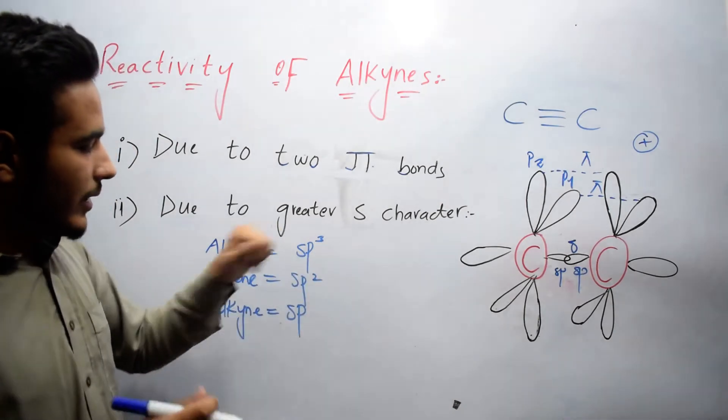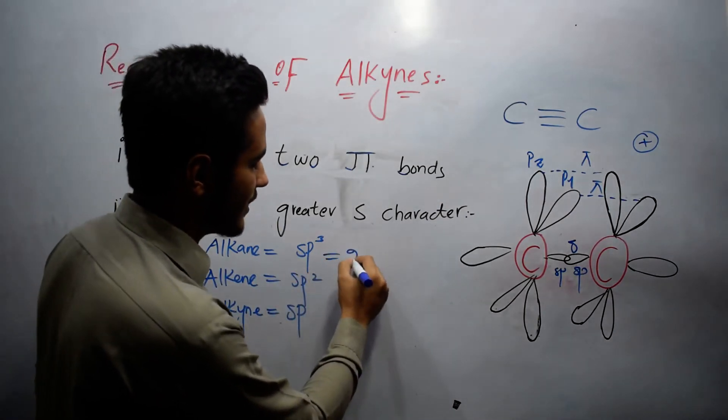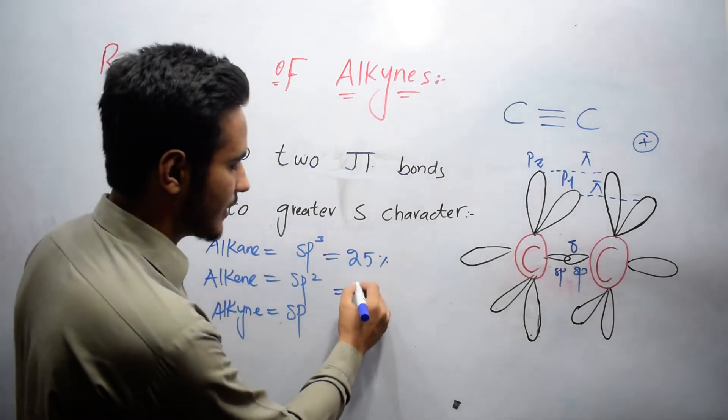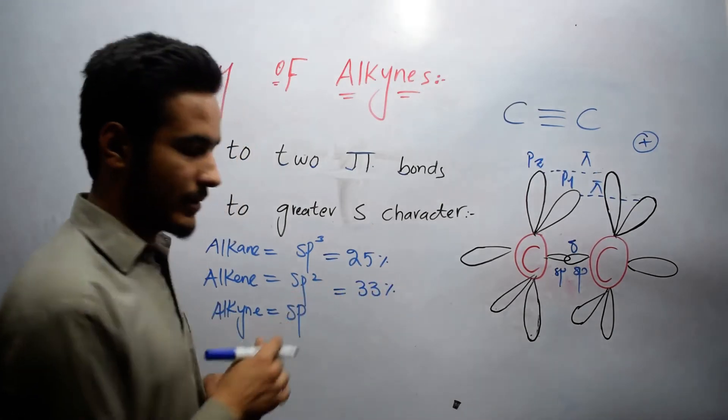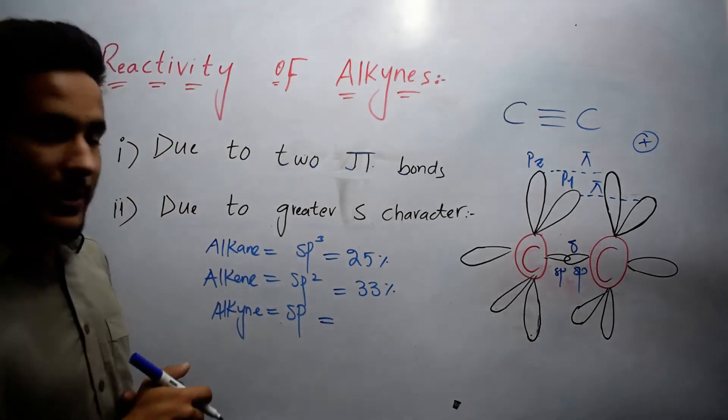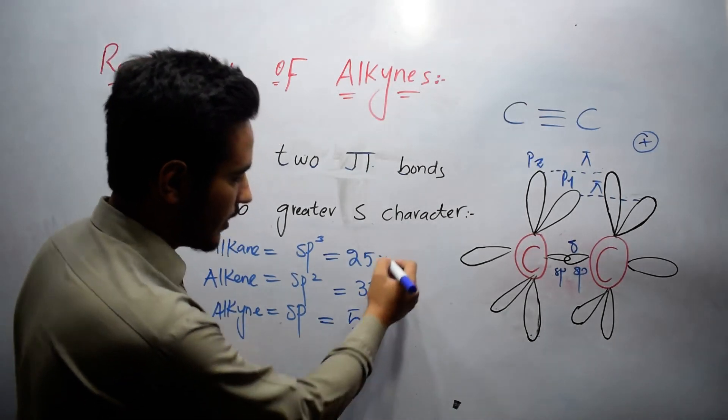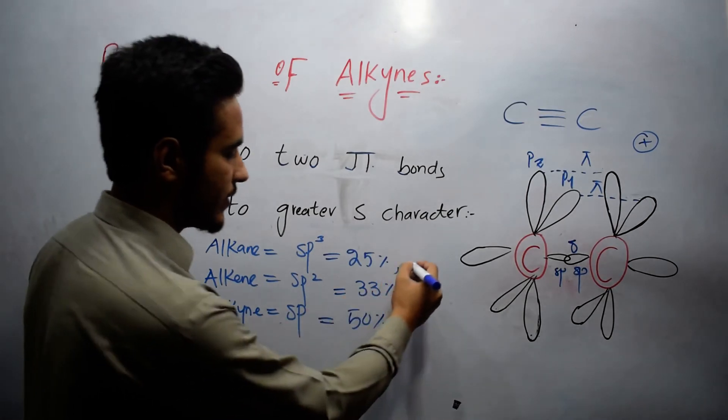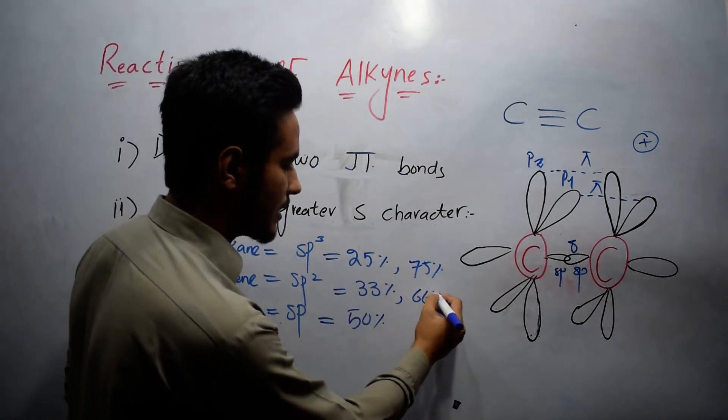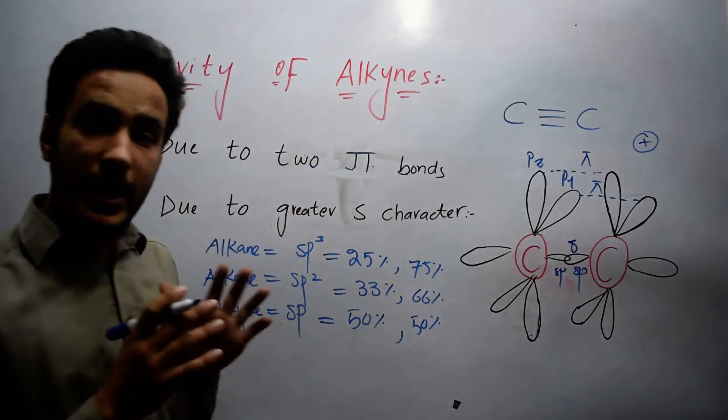So here in case of alkanes, we have 25% character of s. In case of alkenes, s character is 33%. While in case of alkynes, s character is 50%. And p character in alkanes is 75%. In alkenes, p character is 66%, and here it is 50%.